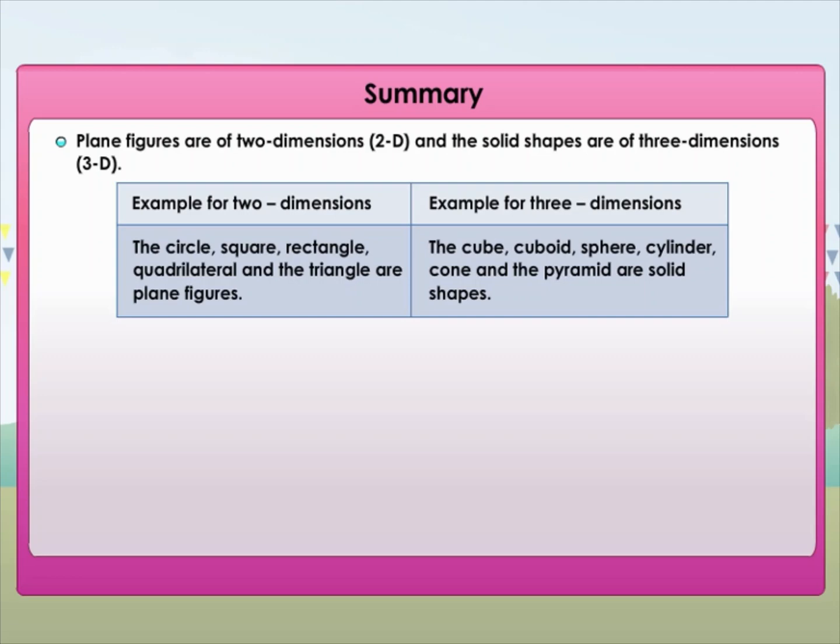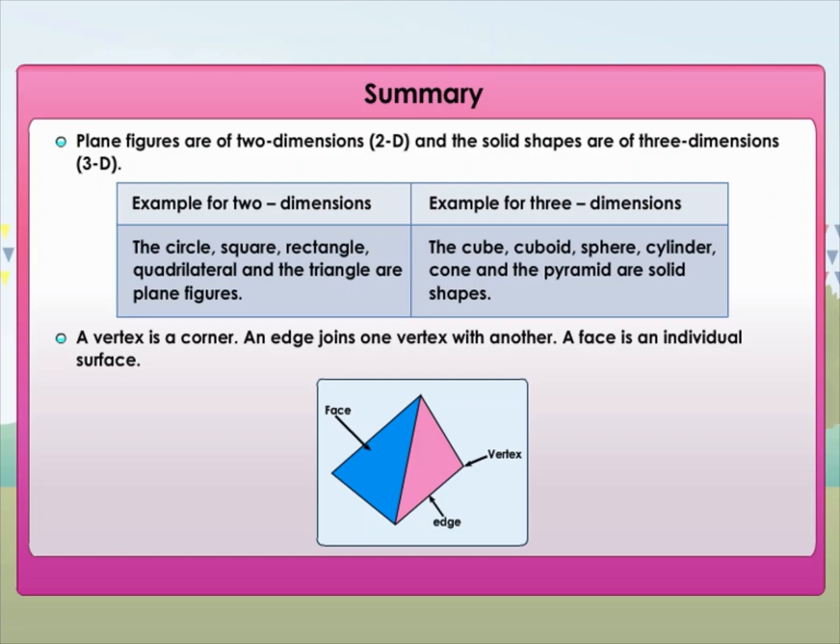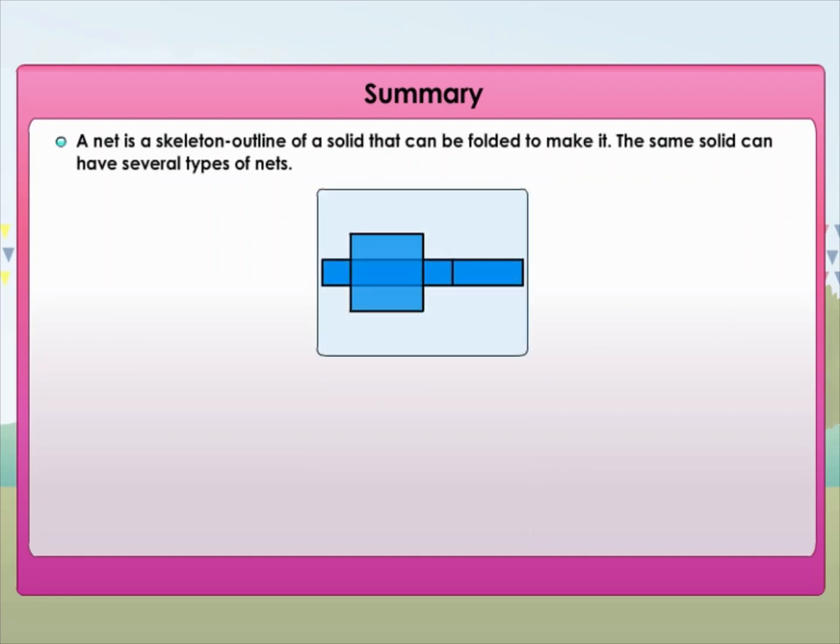Examples for three dimensions: The cube, cuboid, sphere, cylinder, cone, and pyramid are solid shapes. A vertex is a corner. An edge joins one vertex with another. A face is an individual surface. A net is a skeleton outline of a solid that can be folded to make it. The same solid can have several types of nets.